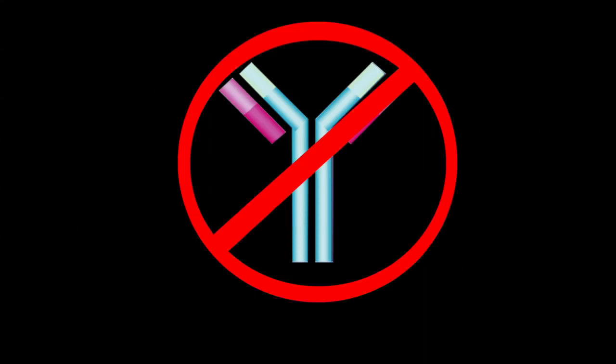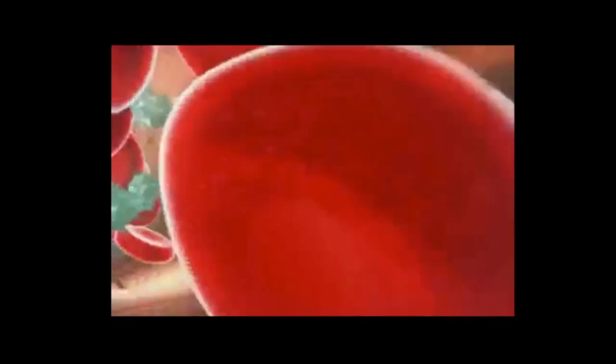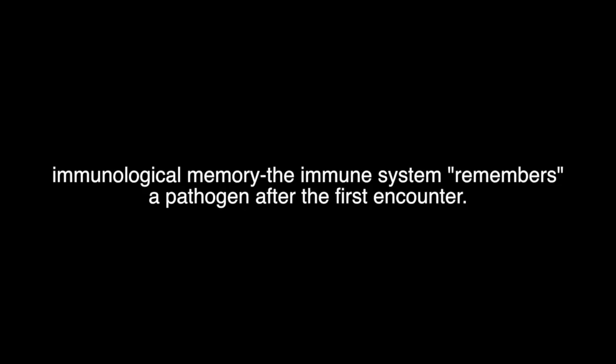For many days after an antigen has entered the body, there are no antibodies produced in the bloodstream — this is the lag period. During this period, the lymphocytes have to go through recognition and activation. This takes a few days and therefore is a slow immune response. But soon, specialized active cytotoxic T cells and antibodies specific for the harmful antigen begin to appear in the bloodstream, increase, level off, and then slowly decrease until barely detectable. The memory cells created are part of immunological memory — the immune system remembers a pathogen after the first encounter, giving it the ability to initiate the secondary immune response.